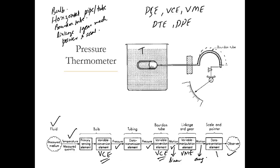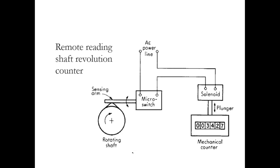Another example is a remote-reading shaft revolution counter. If a shaft is at a remote location, a sensing arm and micro-switches connected to a solenoid push a plunger. Wires can be long enough to transmit the signal to the observer, and a mechanical counter counts the shaft rotations. This instrument can again be divided into primary sensing element, variable conversion element, variable manipulation, data presentation, and other functional elements.